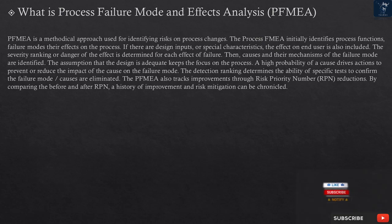Process FMEA is a methodical approach used for identifying risks on process changes. The process FMEA initially identifies process functions, failure modes, and their effects on the process. If there are design inputs or special characteristics, the effect on the end user is also included. The severity ranking, or danger of the effect, is determined for each effect of failure. Then, causes and their mechanisms of the failure mode are identified. The assumption that the design is adequate keeps the focus on the process.